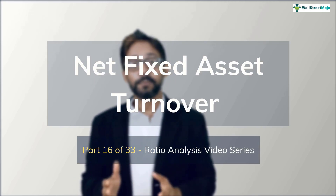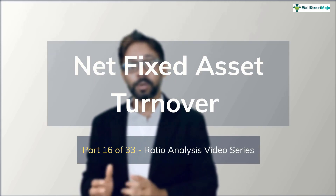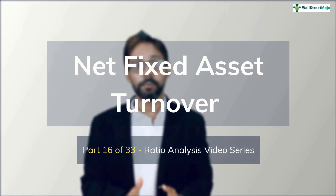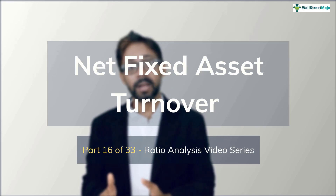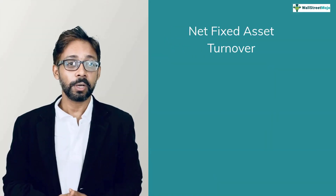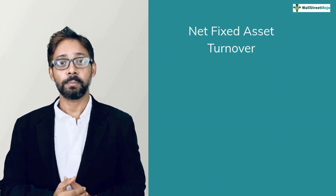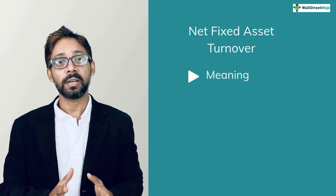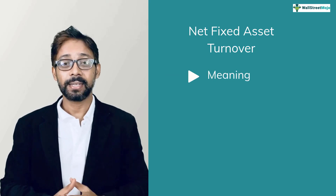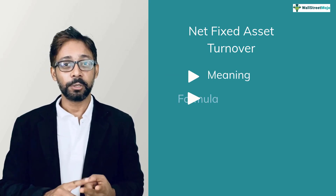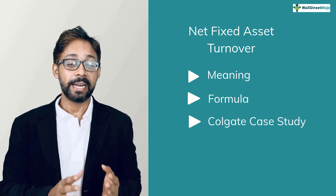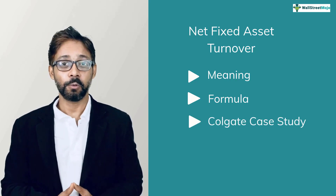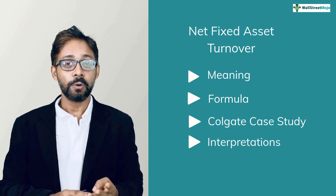In simple terms, the net fixed asset turnover ratio means how much revenue the company earns on the tangible assets — that is the property, plant and equipment. In this tutorial, we have four things to focus upon: number one, understand what net fixed asset turnover ratio means; number two, its formula and calculations; number three, we'll calculate net fixed asset turnover ratio for the Colgate case study; and number four, its interpretations and uses.